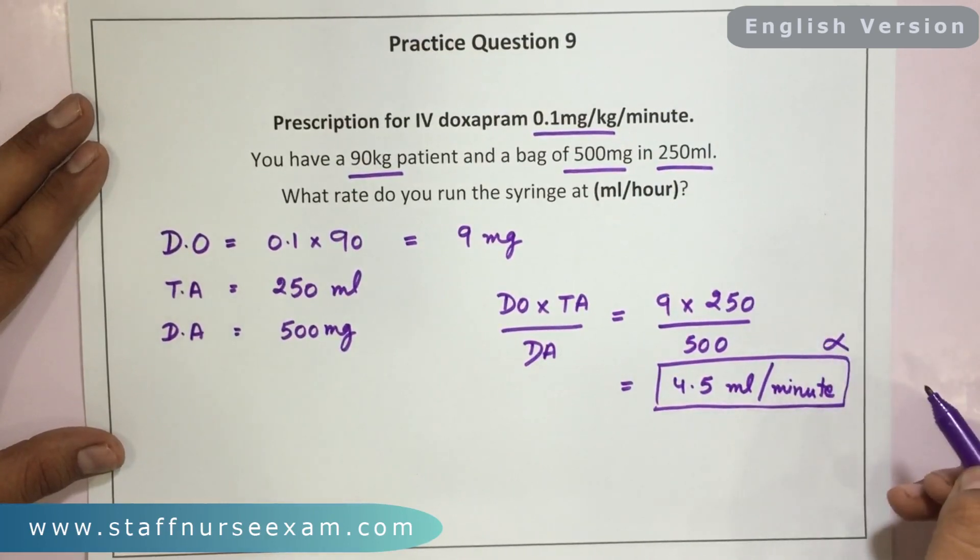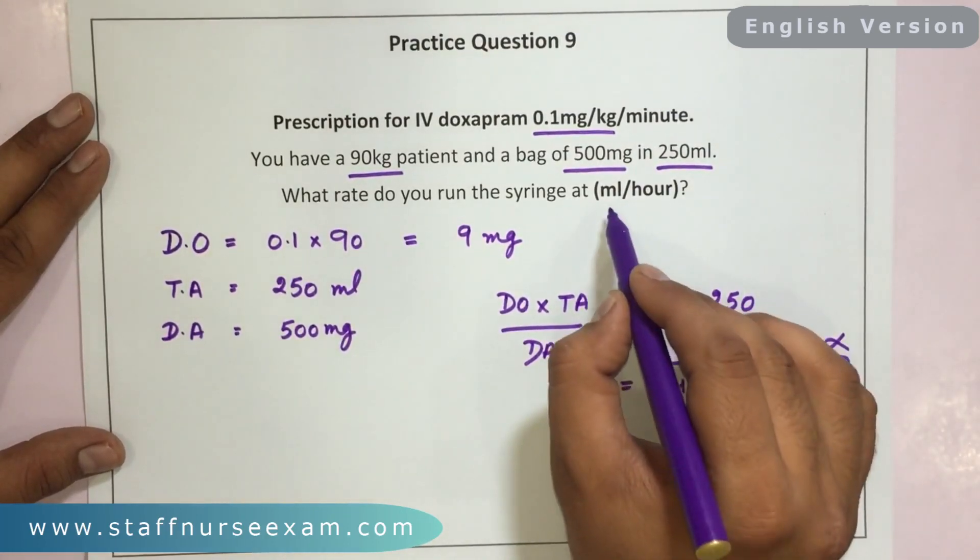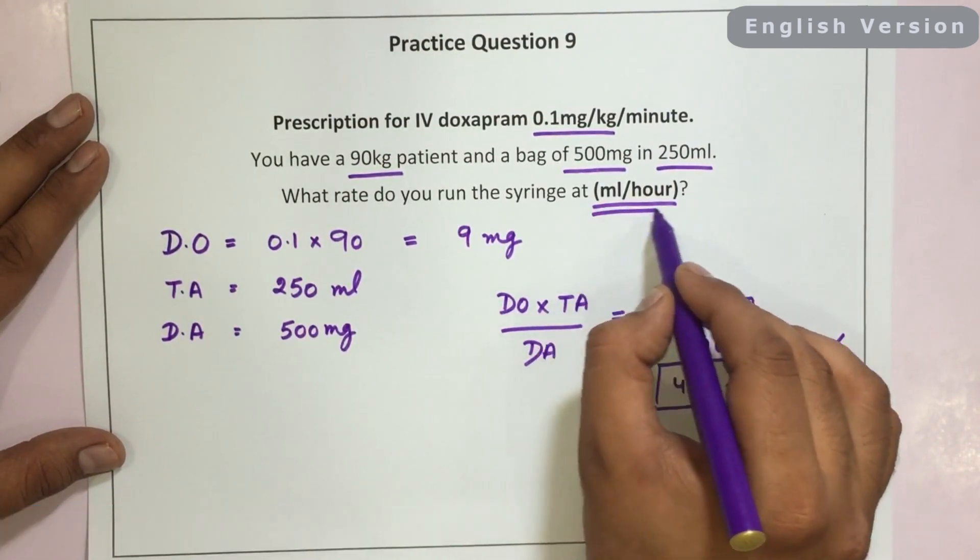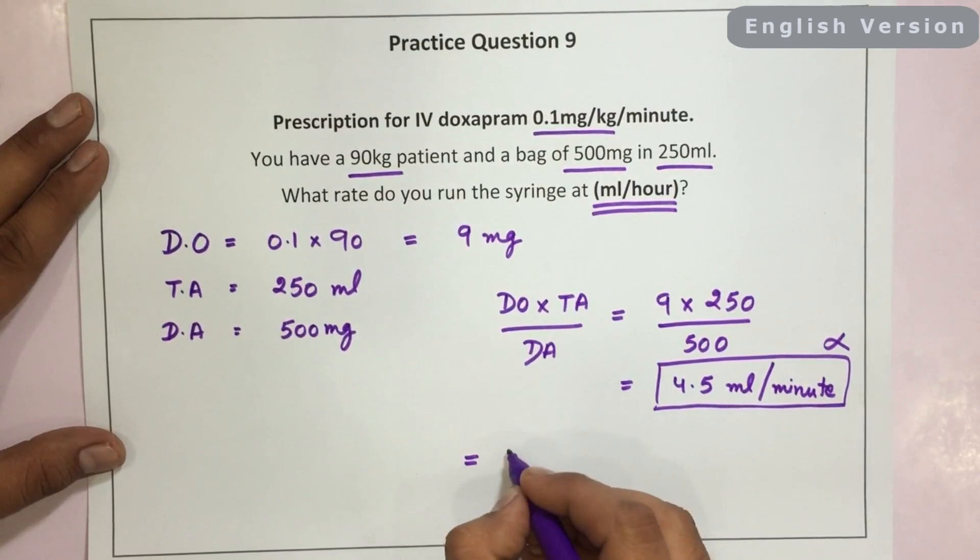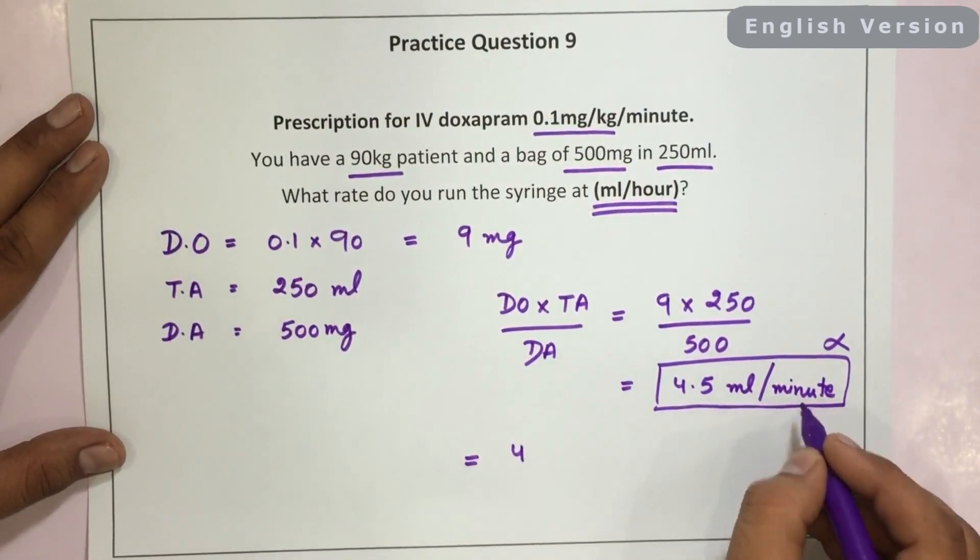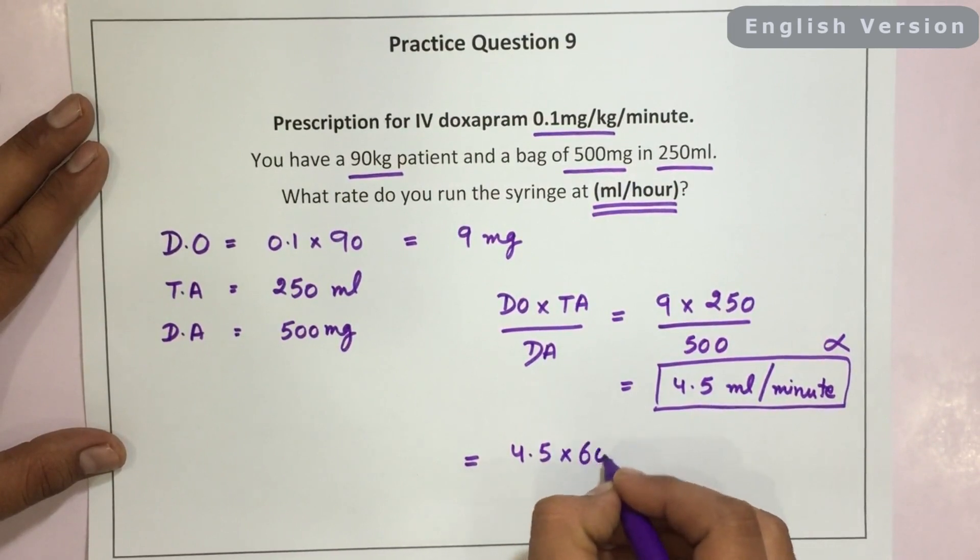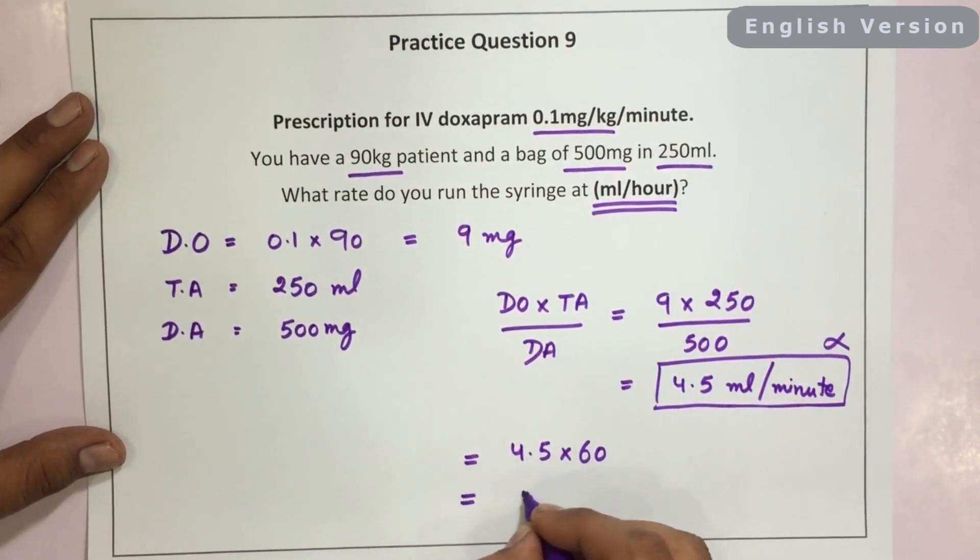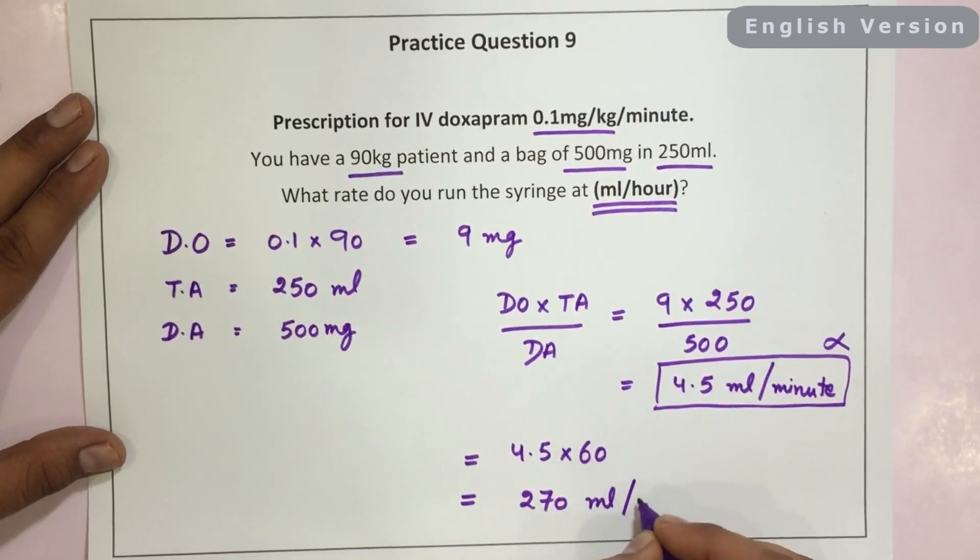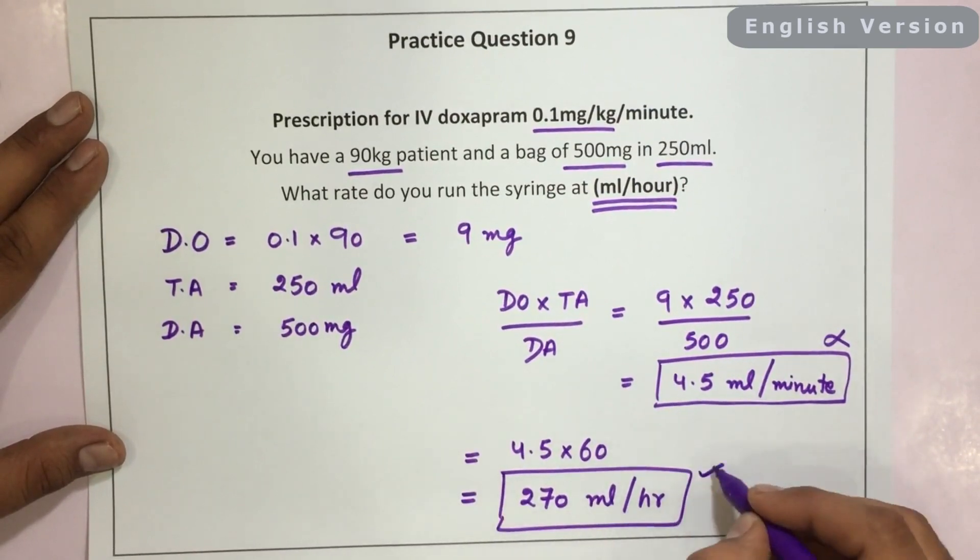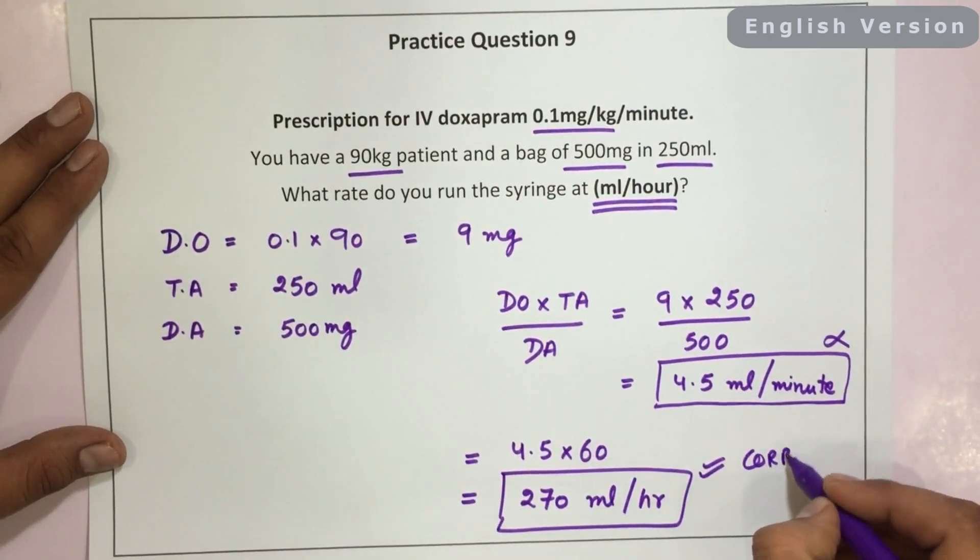No, this would not be the answer because the question here is asking in ml per hour. So what we need to do is, we need to convert this ml per minute into ml per hour by multiplying it with 60. So the answer would be 270 ml per hour. This would be the correct answer.